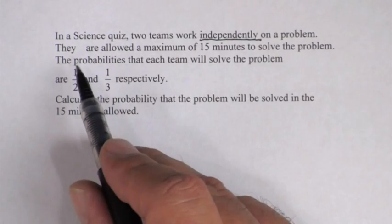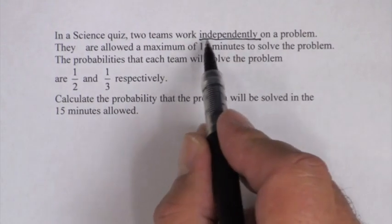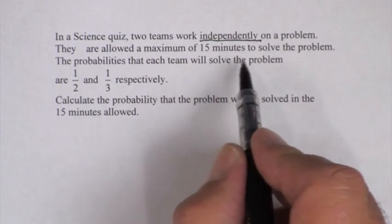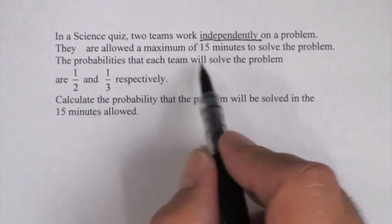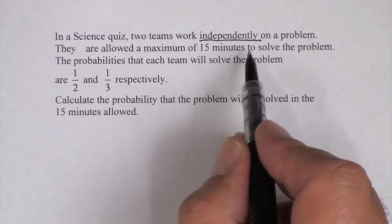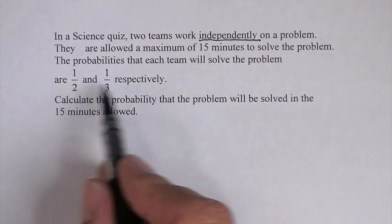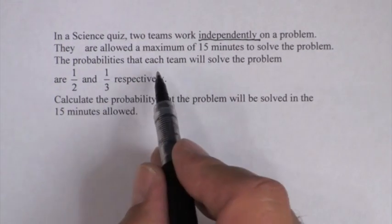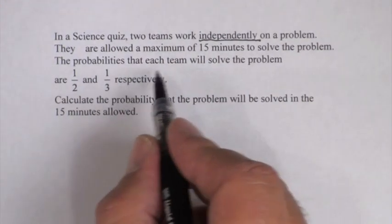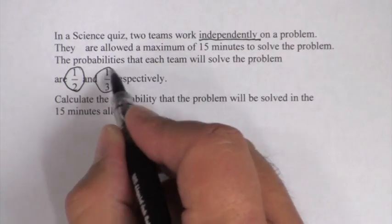Something else given to us is that the two teams are allowed 15 minutes. Many students and teachers get confused with this 15 minutes, but it does not play a part within the probability — that is just the time frame we work within. What is very important are the probabilities given to us: the probability that each team will solve the problem is a half and a third.